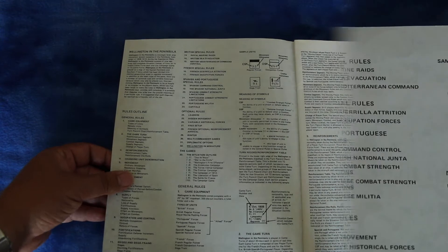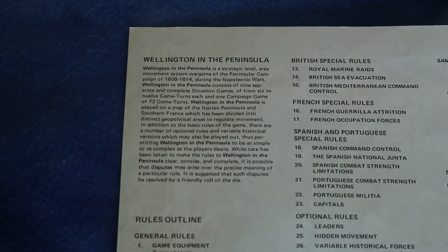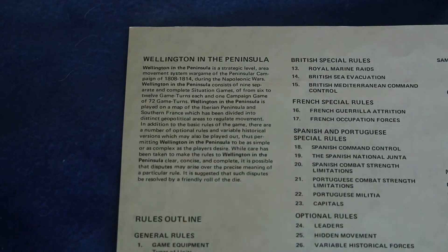Does it have a description of what the game's about? Wellington in the Peninsula is a strategic level area movement system war game of the Peninsular campaign of 1808 to 1814 during the Napoleonic Wars. It consists of nine separate and complete situation games of 6 to 12 game turns each and one campaign game of 72 game turns. Alright, we get the idea.